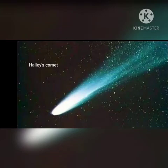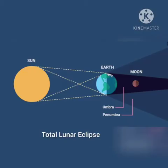Halley's Comet appears once in every 76 years. It appeared on 9th February 1986. Eclipse is formed when the sunlight is blocked by one heavenly body from another. The two types of eclipse are lunar eclipse and solar eclipse.